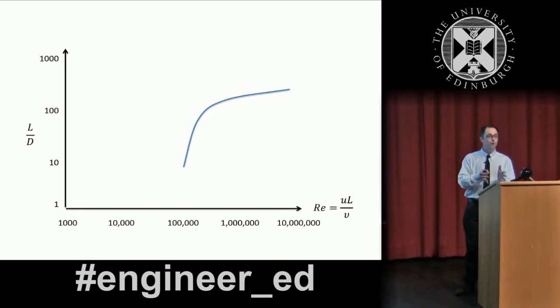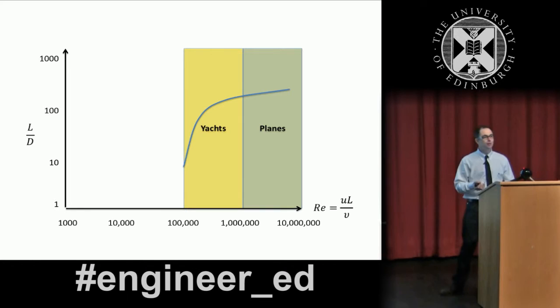But if you go slower or smaller, then the Reynolds number goes down and the efficiency of your foil drops down. So the key point here is that to make an airplane flying efficiently is far easier than to make a yacht sail efficiently because the Reynolds number goes down and the efficiency of your foils goes down.